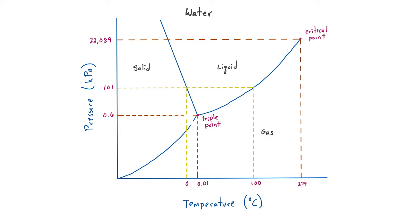Phase diagrams are useful because you can look at any combination of pressure and temperature and determine what phase a particular substance will be at those values. For instance, at atmospheric pressure, which is about 101 kilopascals, we can see that all temperatures below zero give solid water or ice, all temperatures between zero and 100 Celsius will be in the liquid phase, and all temperatures above 100 Celsius will be in the gas phase.